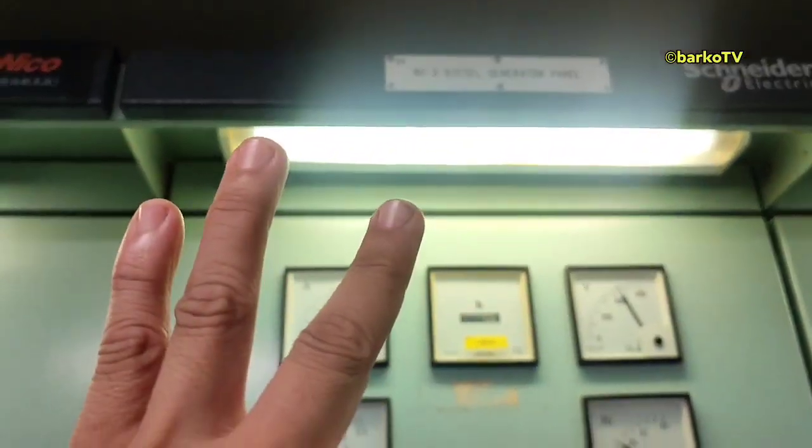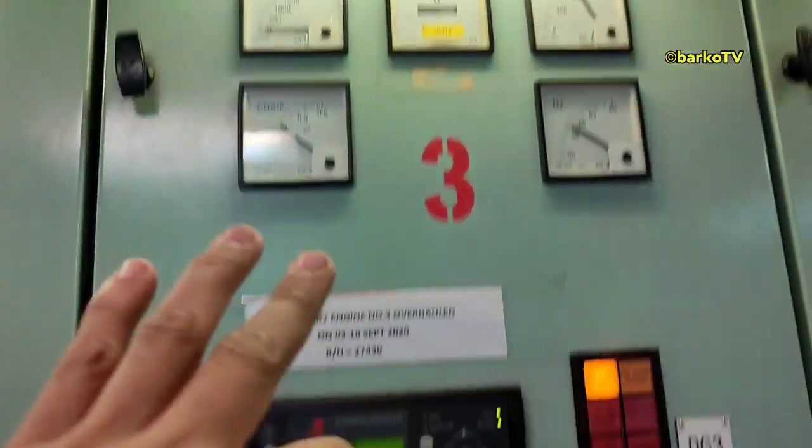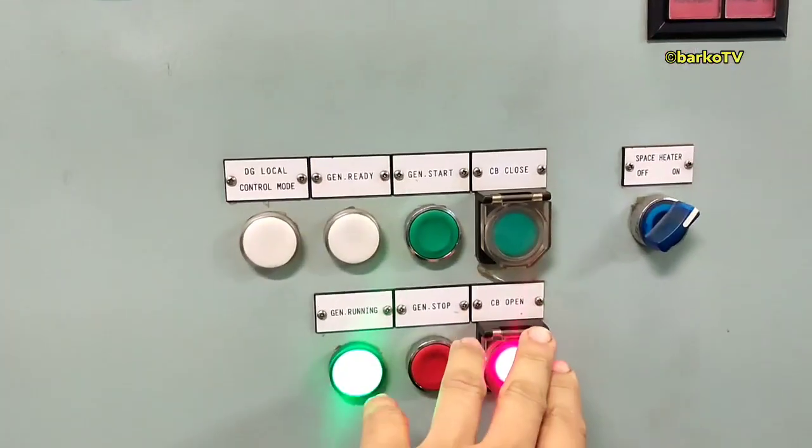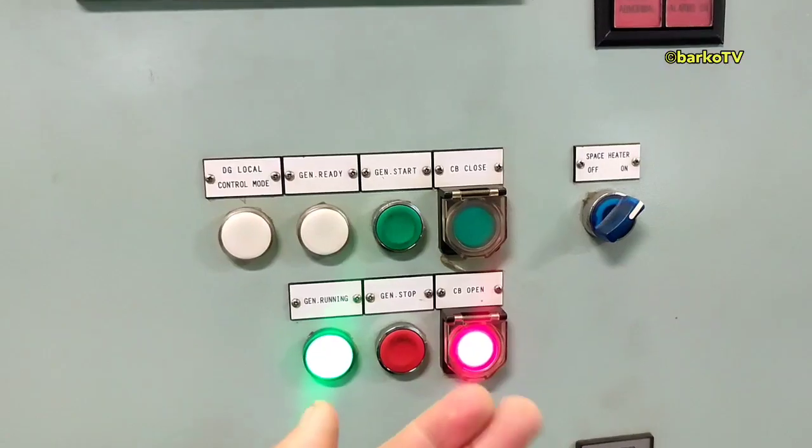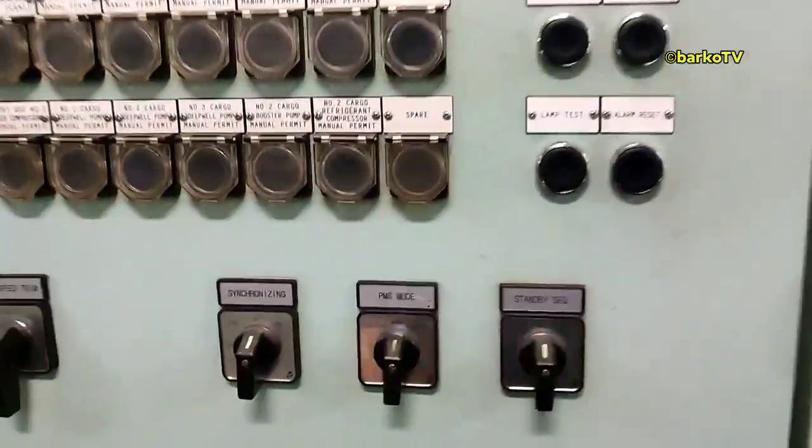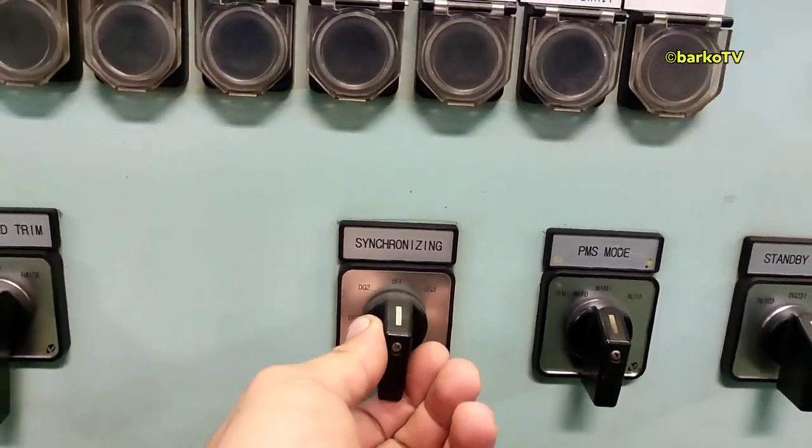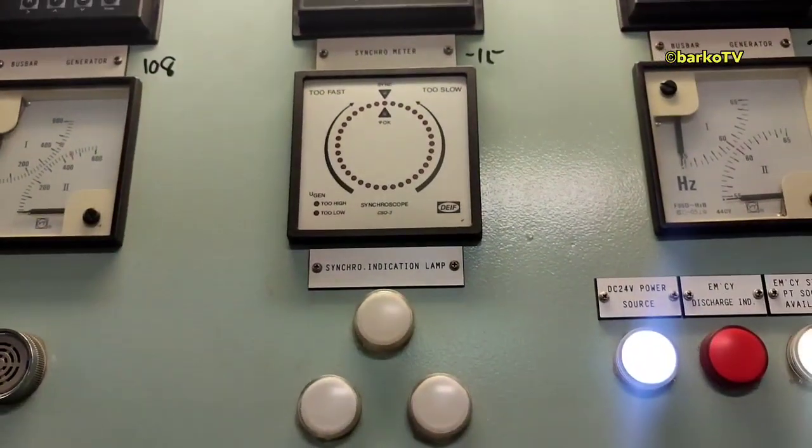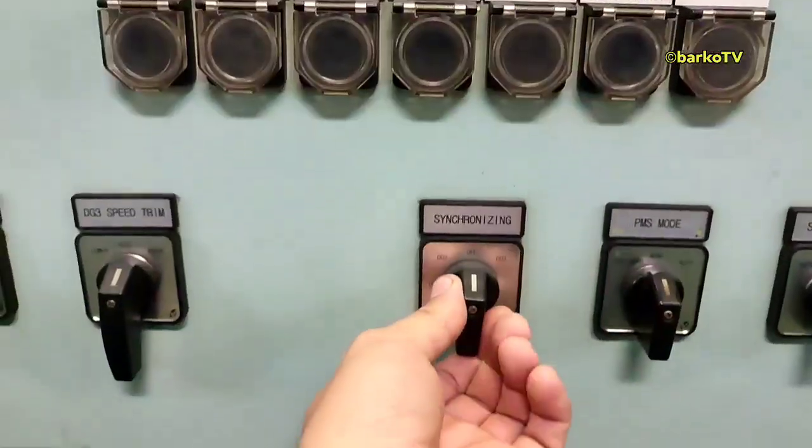Number three is running in idle speed, CB open - it means out from the bus bar. Synchronize station switch, put to number three.